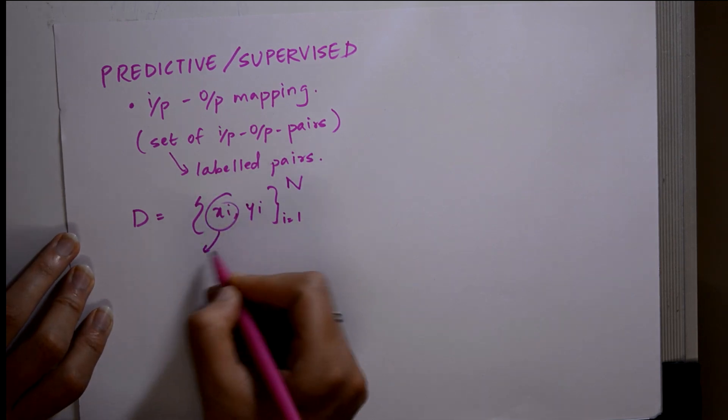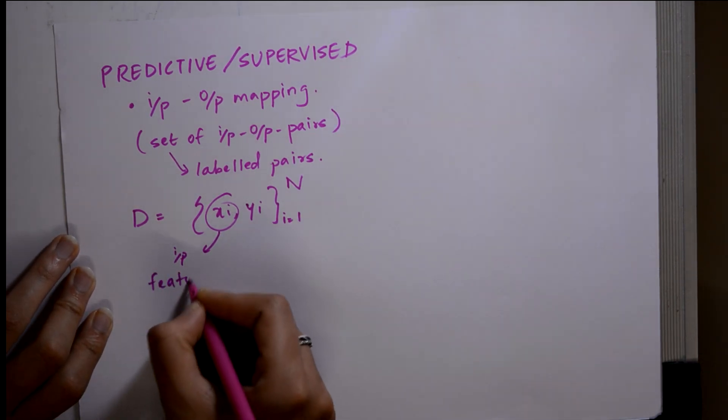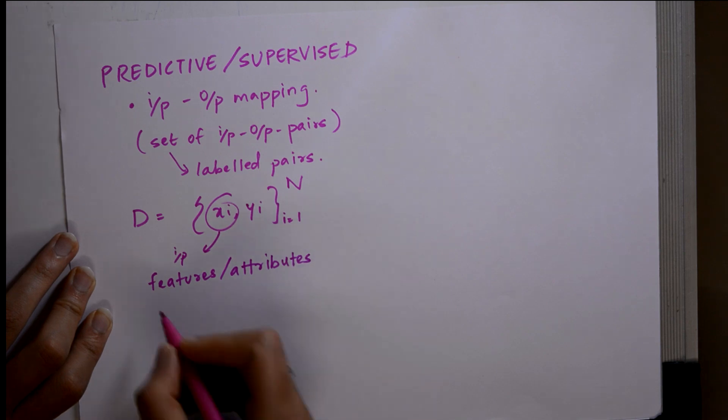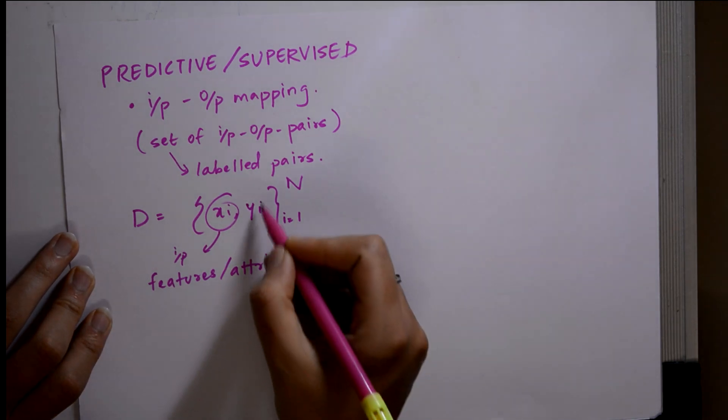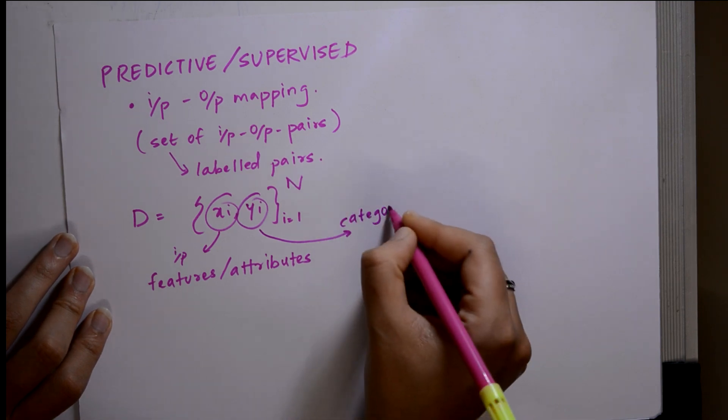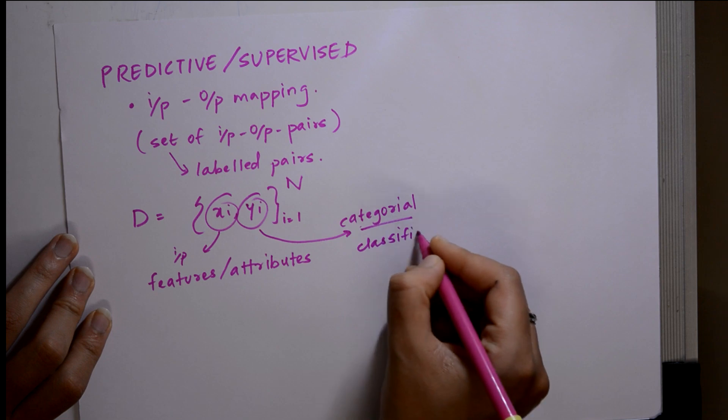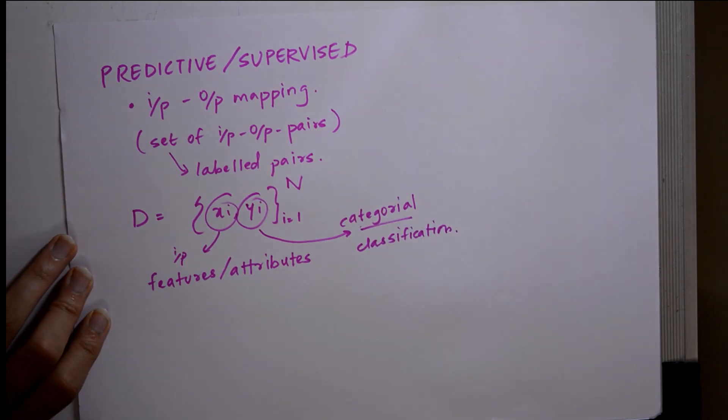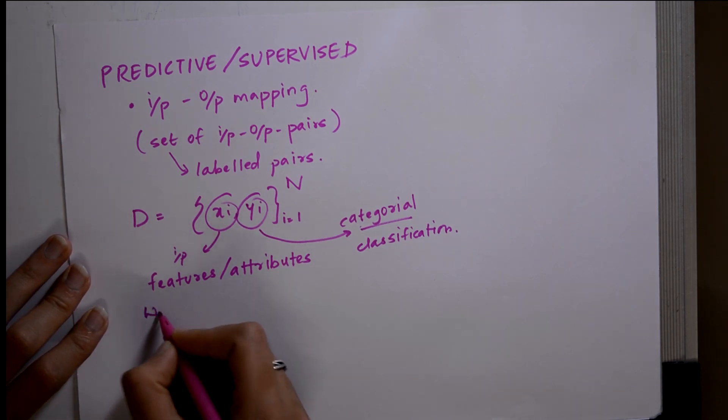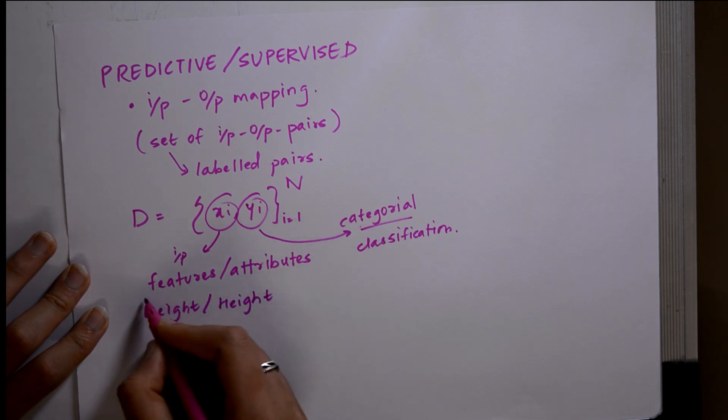xi, we can call it as input. Input for supervised learning is basically features or attributes. And yi, you can call this as categorical. The output is categorical, which can be used in categorical classification. Suppose the inputs are in terms of weight or height. So you have weight or height as your input.